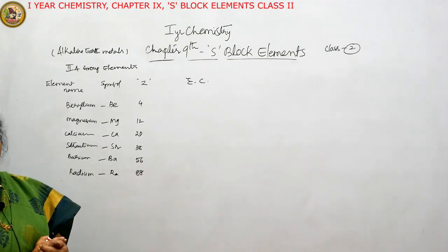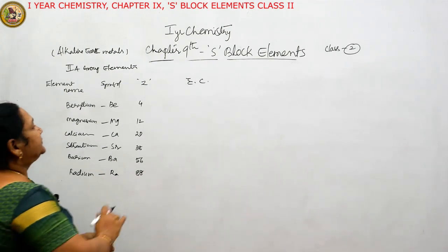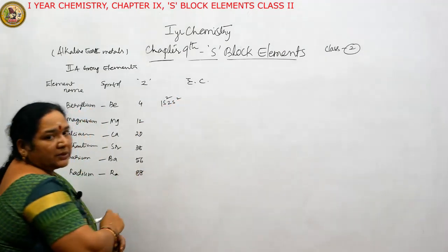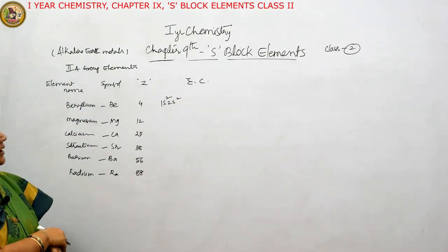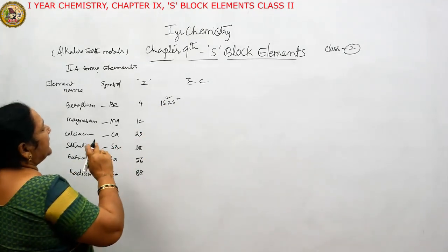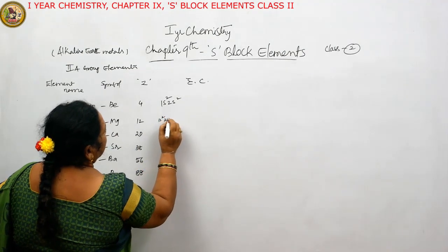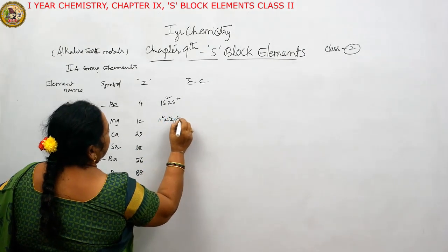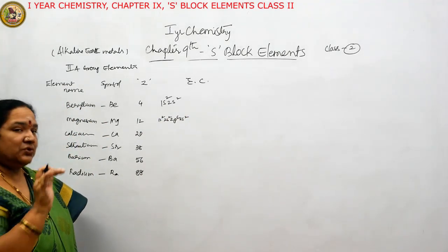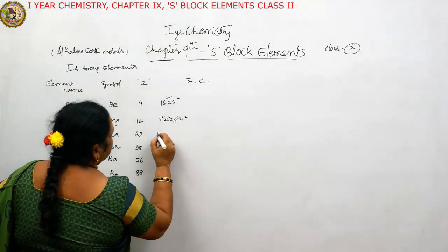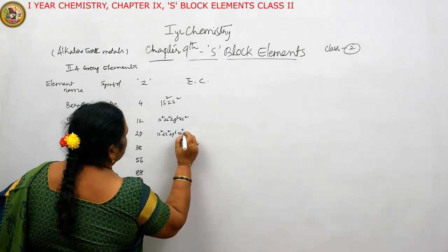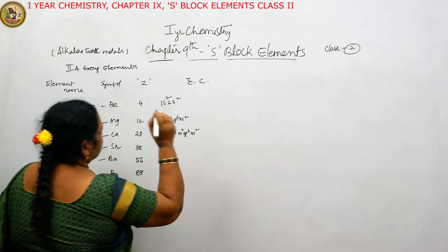Now we will check the electronic configurations. For beryllium (Z=4): 1s², 2s². For magnesium (Z=12): 1s², 2s², 3s² — the third shell is entered. For calcium (Z=20): the fourth shell is entered — 1s², 2s², 2p⁶, 3s², 3p⁶, 4s².